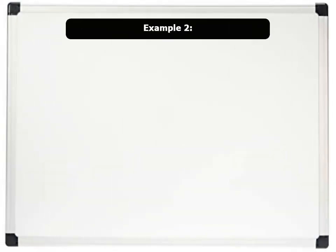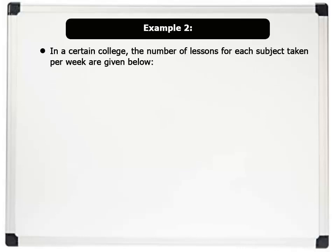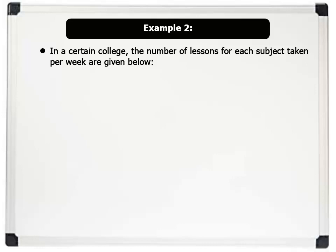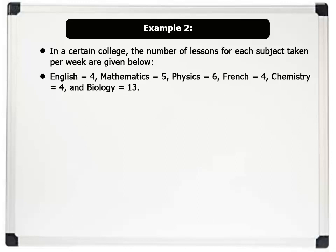Example 2. In a certain college, the number of lessons for each subject taken per week are given below. English equals 4. Mathematics equals 5. Physics equals 6. French equals 4. Chemistry equals 4. And Biology equals 13. Draw a pie chart to represent this information.